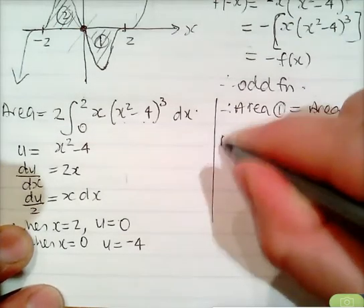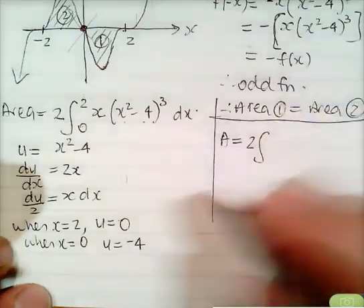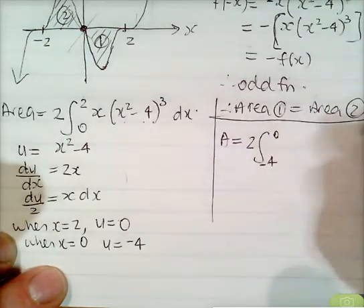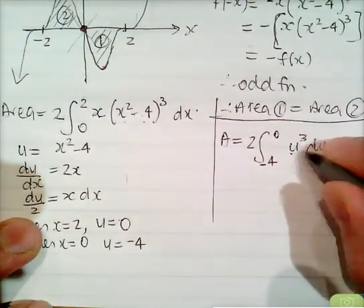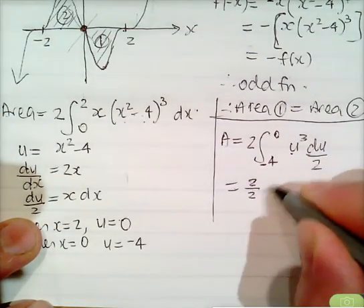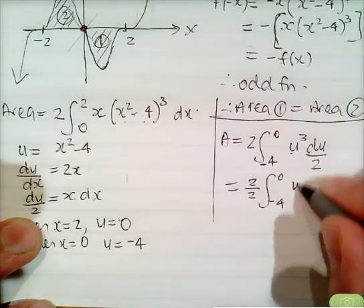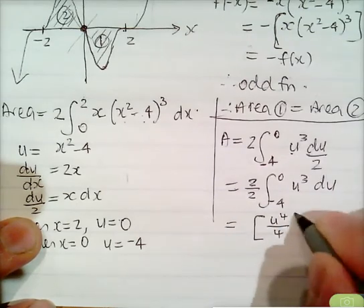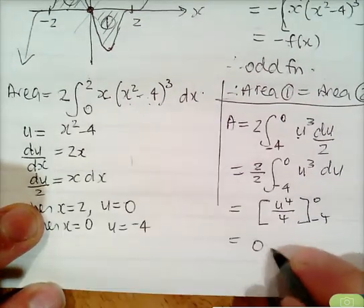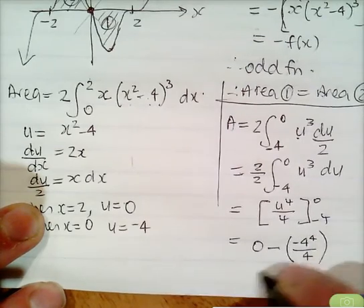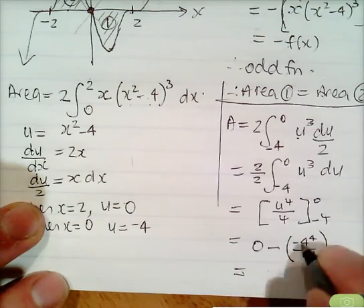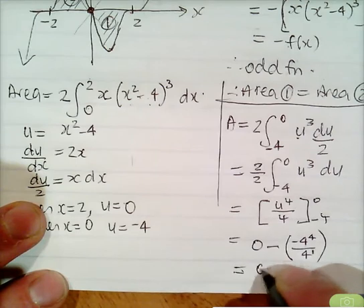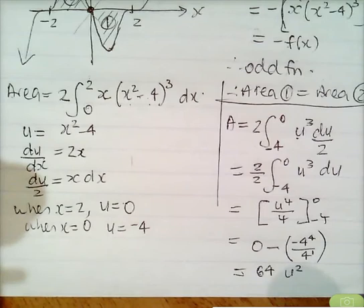Substituting, the area becomes 2 times the integral from 0 to negative 4 of u cubed times du on 2. The 2 and the half cancel to give 1, leaving the integral from 0 to negative 4 of u cubed du. This equals u to the 4 over 4 evaluated between 0 and negative 4, giving 0 minus negative 4 to the power 4 over 4. That's negative negative 4 cubed, which is positive 4 cubed, equalling 64. Therefore, the area is 64 units squared. Those are Questions 9 and 10 from Exercise 3.11.